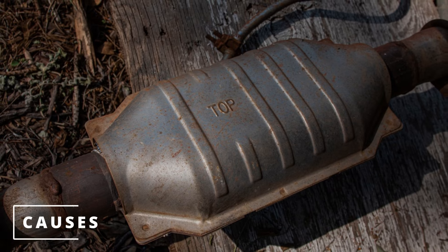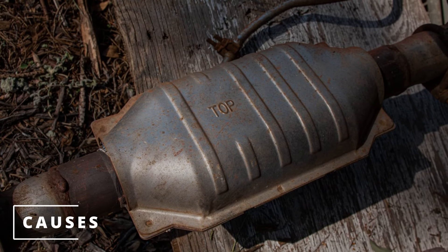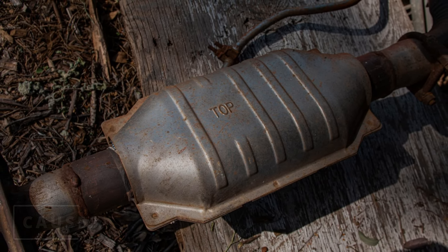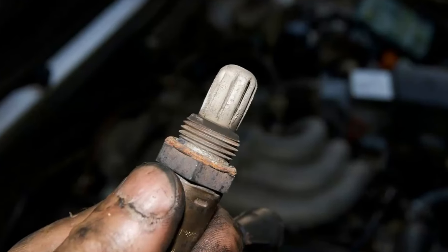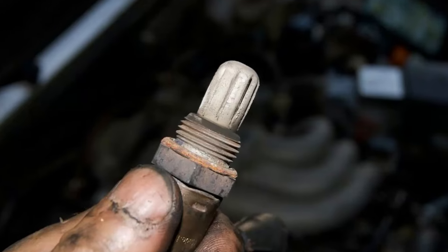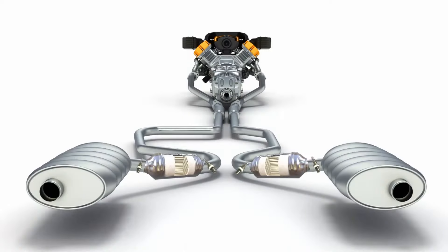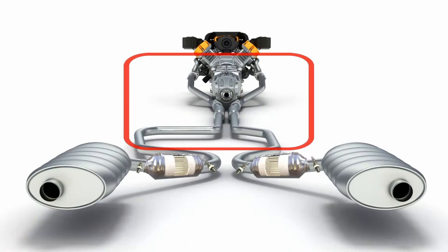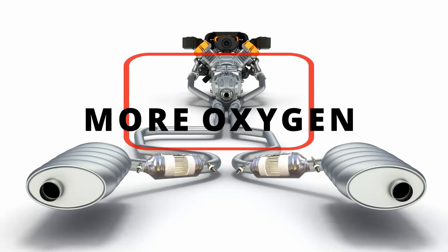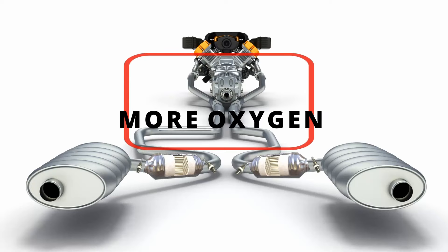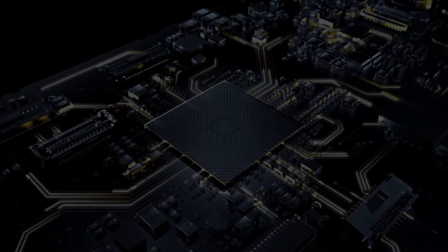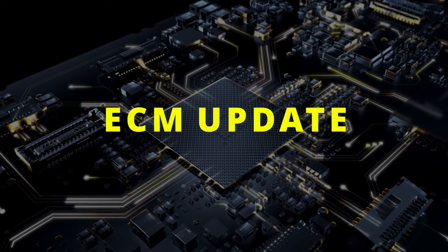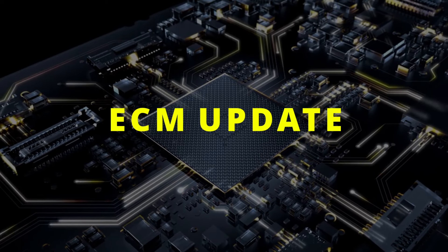Most of the time the main cause for the P0420 code is a bad catalytic converter. Although the code could also appear due to a malfunctioning oxygen sensor, damaged or corroded connectors, an exhaust leak before the catalytic converter — which causes more oxygen to enter the exhaust and disrupt the oxygen sensor readings — and in some situations it could require an ECM update.